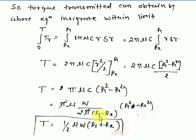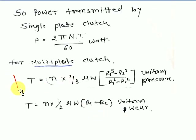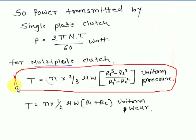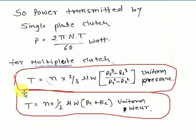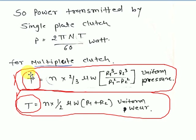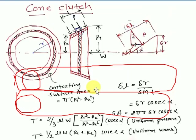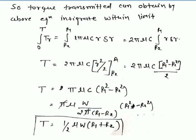To summarize: for uniform pressure theory use T = (2/3)μW(r1³ - r2³)/(r1² - r2²), and for uniform wear theory use T = (1/2)μW(r1 + r2). In an exam, use whichever theory is specified. After finding torque, calculate power using Power = 2πNT/60 in watts. That covers the theory for single plate clutch. Thank you — if you like the video, please share and subscribe.